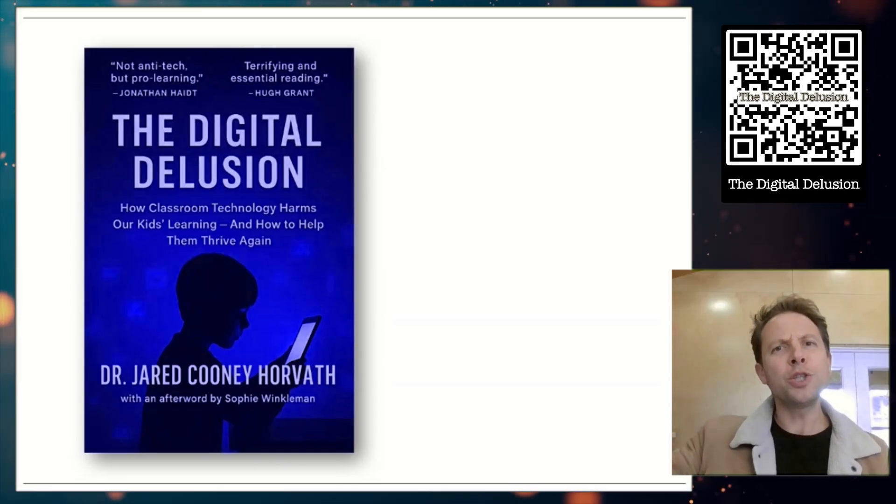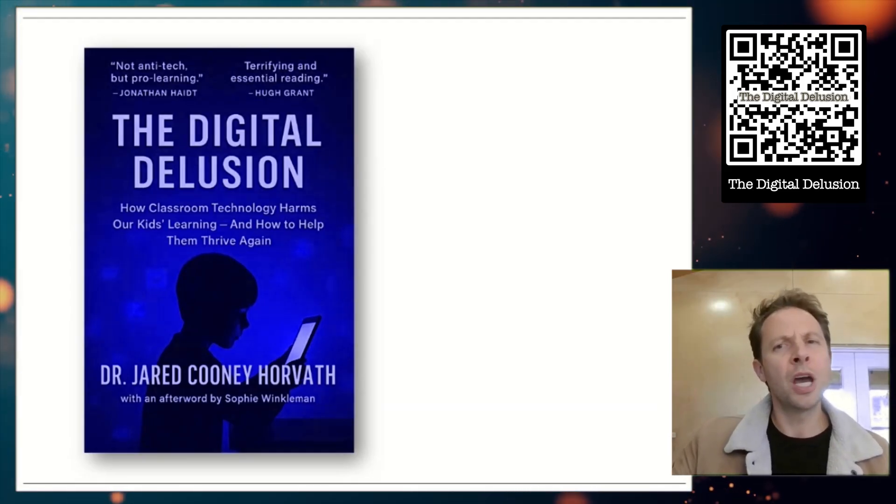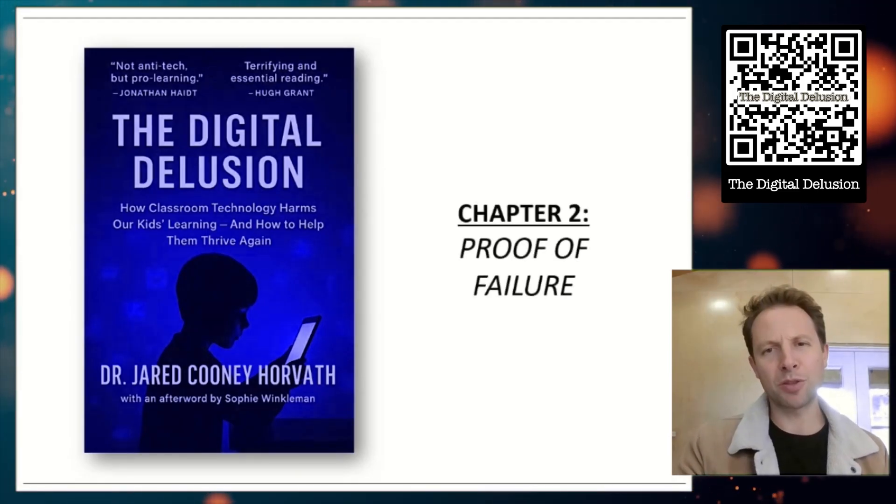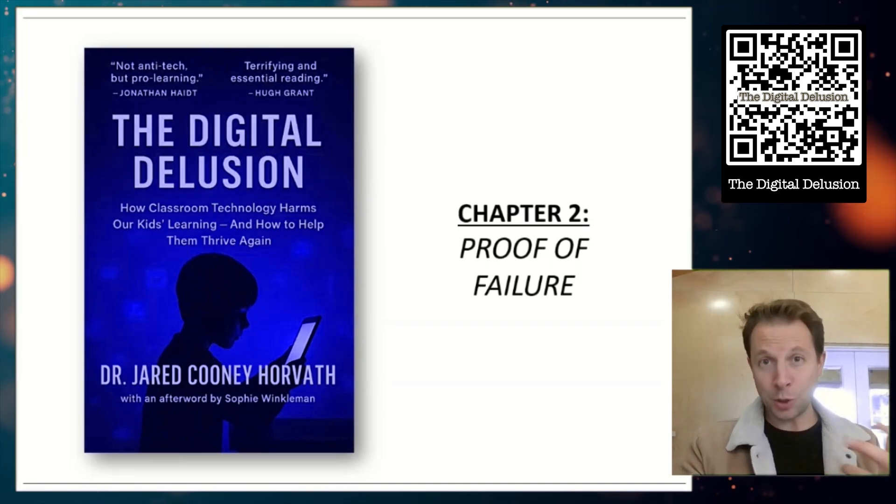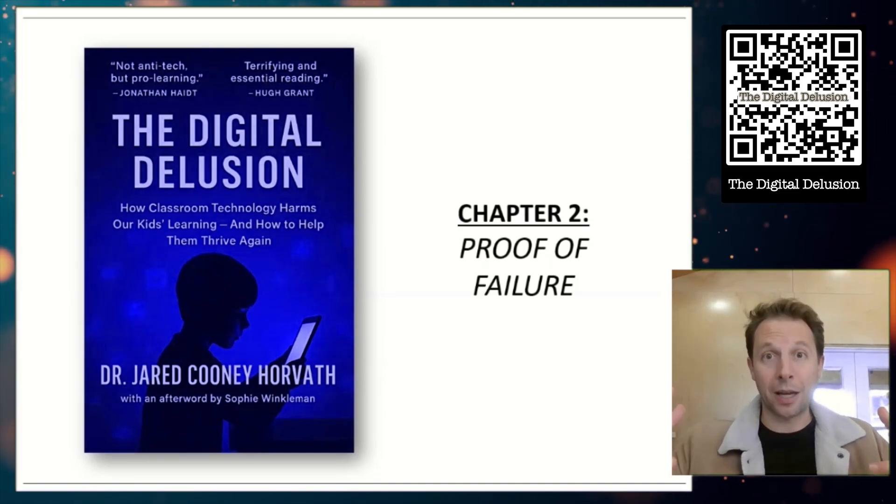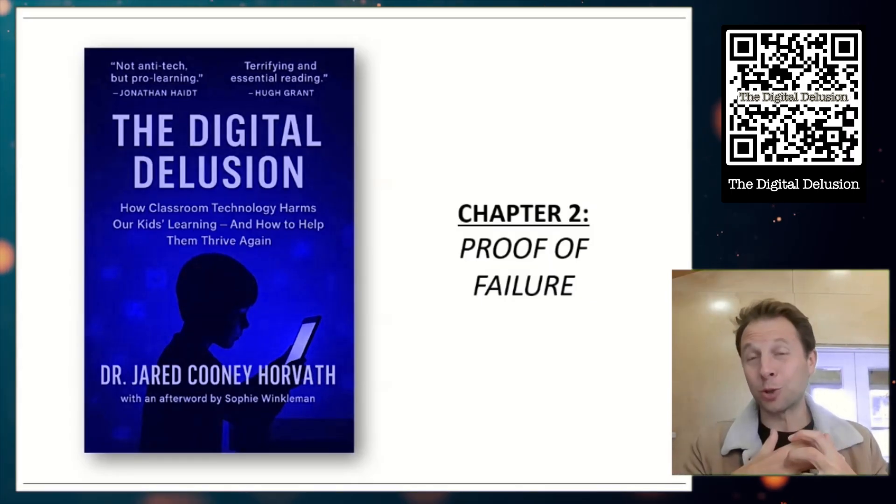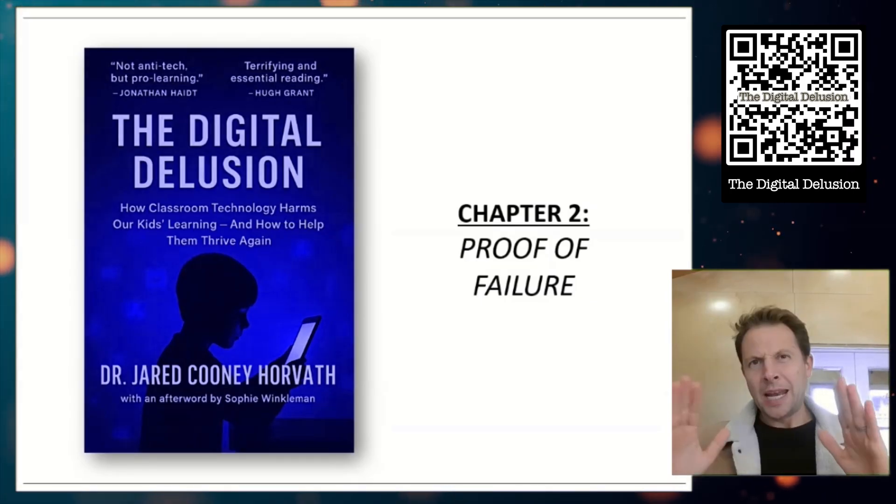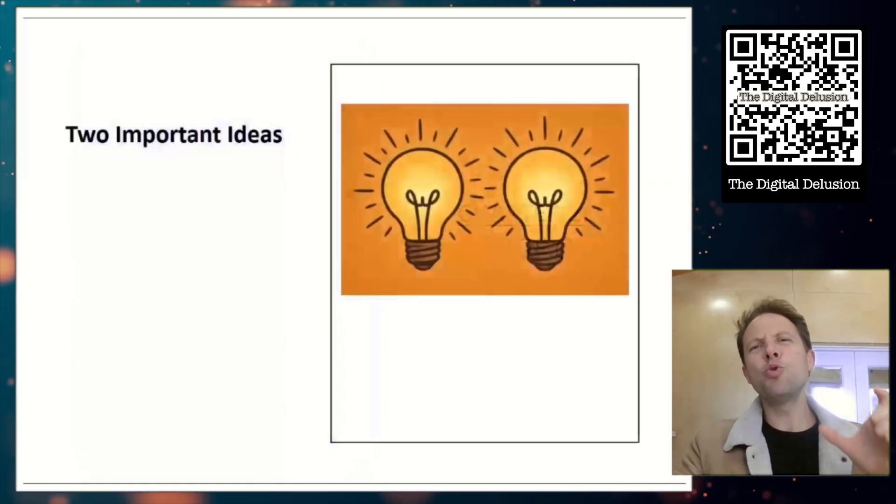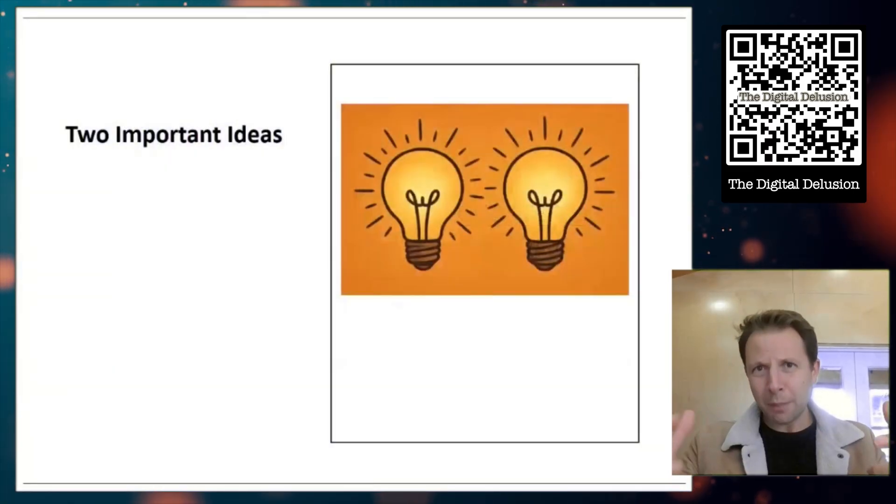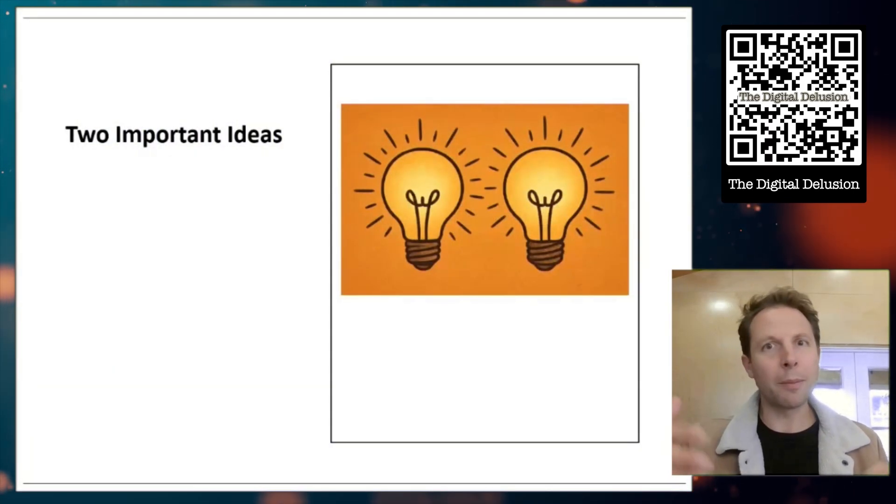We're going through each chapter looking at relevant research. So today, let's take a look at Chapter 2, Proof of Failure. This is where all the hard data comes in that shows digital technology harms learning by and large across all levels of education. Rather than looking at a specific research paper today, I'd rather look at two key ideas which are going to help you think about data moving forward when it comes to ed tech.